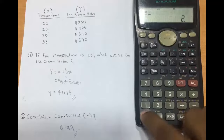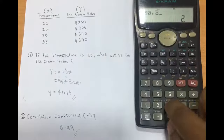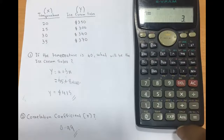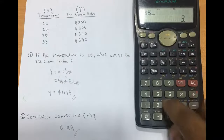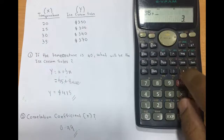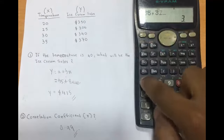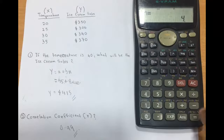Continue entering: 30, comma, 340, M+. Then 35, comma, 370 — make sure to press M+ and don't forget it. You have now entered all the values.